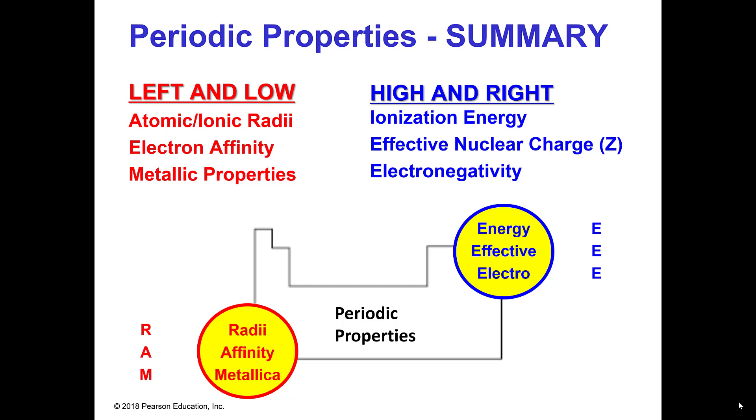The atomic radius, the electron affinity and metallic properties are going to be left and low. So the farther left or the lower you go, these properties are going to be the highest or the most pronounced. Now this won't work 100% of the time, but it'll work about 98% of the time. The only time it doesn't work is if they're really close to each other and you just can't determine it. You'd have to look it up.